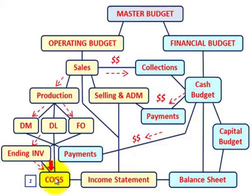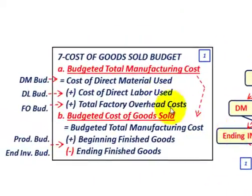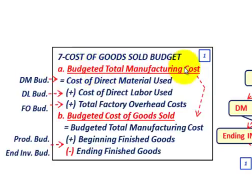Once we know our cost of goods sold budget, we can determine our income statement budget. So what is included in this cost of goods sold budget? The first thing you have to do is determine your budgeted total manufacturing costs.